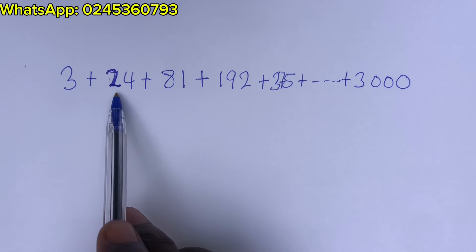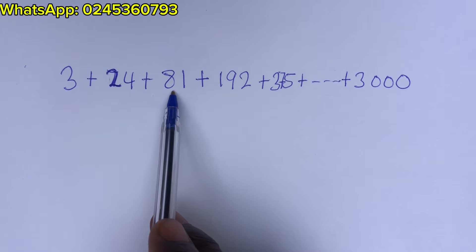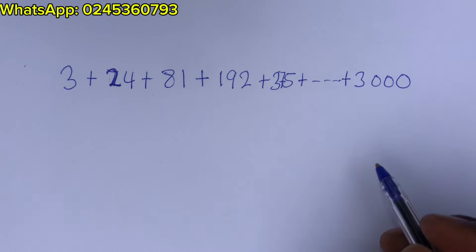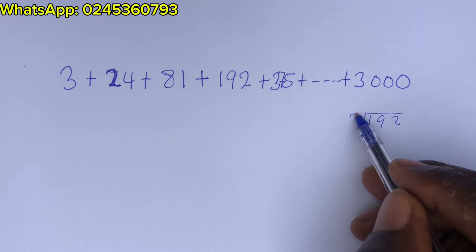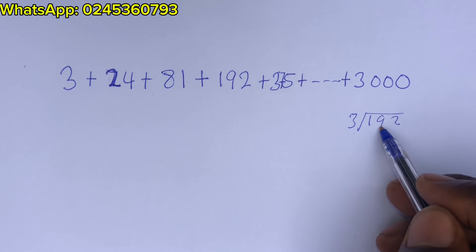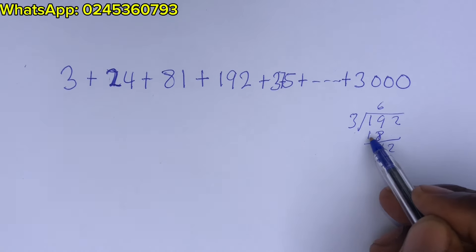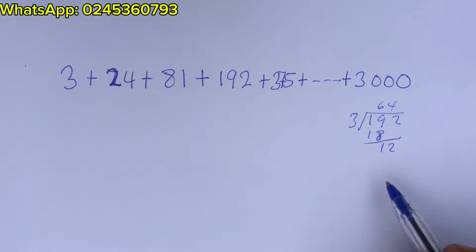3 will divide itself 1. 3 will divide this 8. 3 will divide this 27. Can 3 divide 192? Let's check and see. 192 divided by 3. 3 will go into 19 6 times. That is 18. So this is 1, 2 here. 3 will go here 4. Okay, 64.